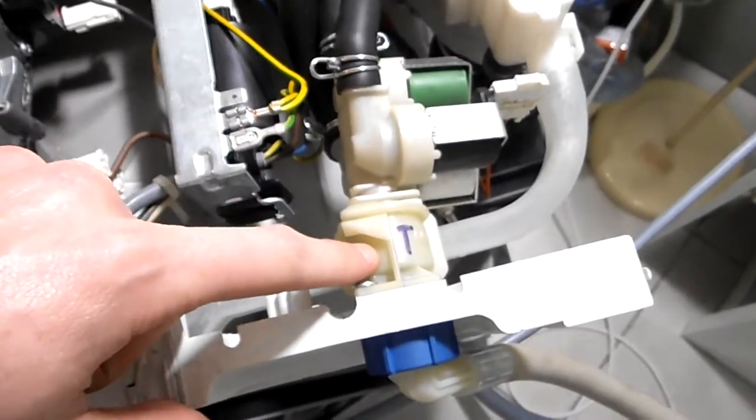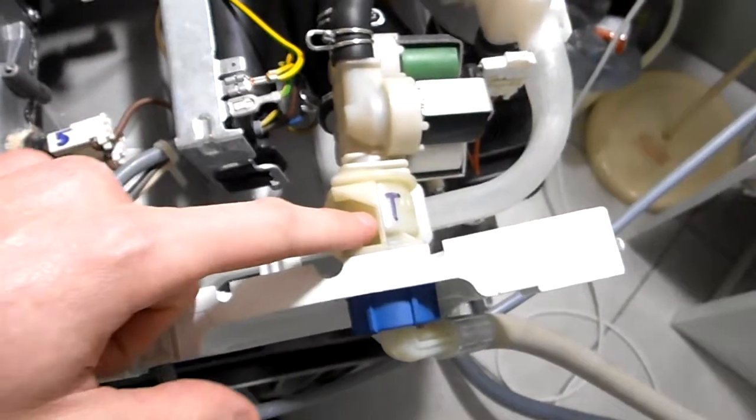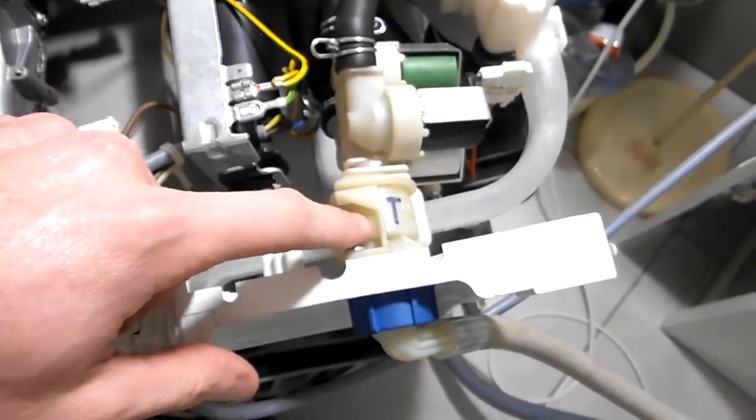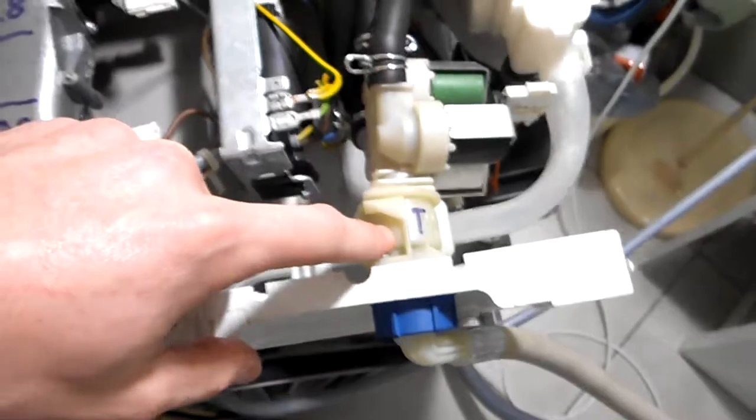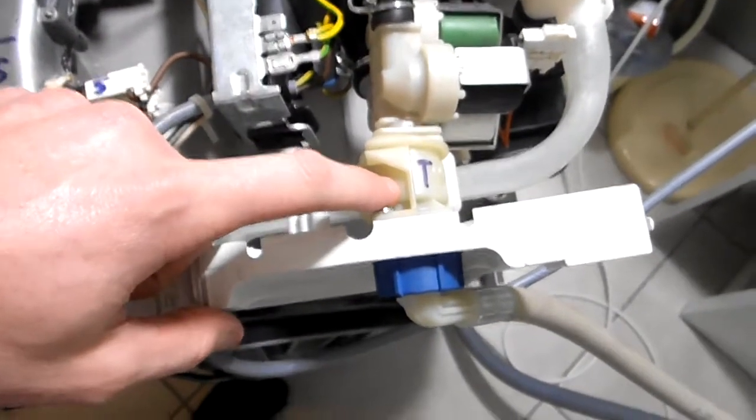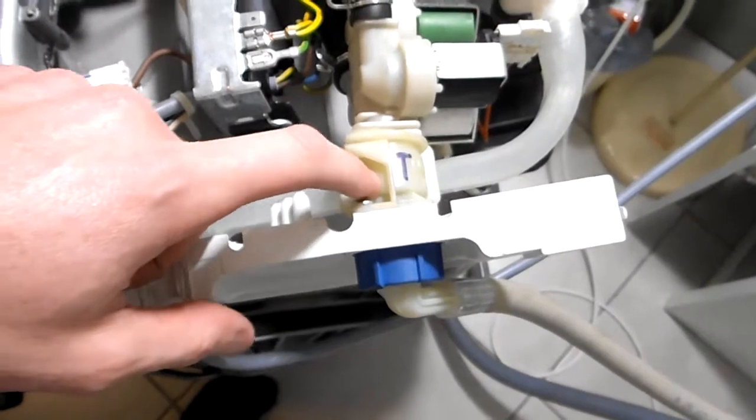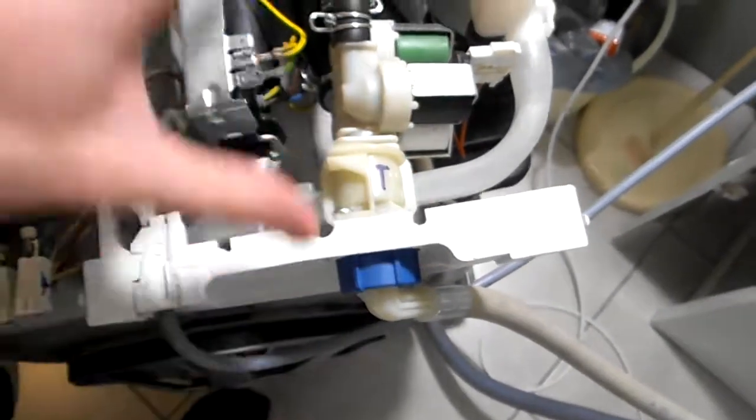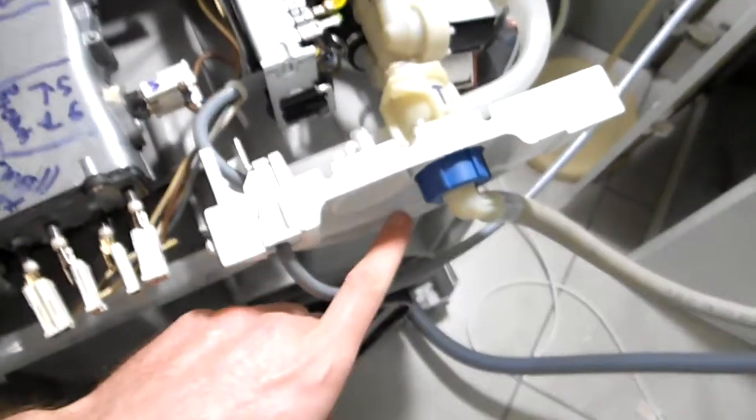But just under here there's also another filter and annoyingly it doesn't look like you can get it out. So if you ever do have a problem with that, I think the best way of cleaning the filter in there is probably to actually leave the machine more or less closed, hold a towel underneath.